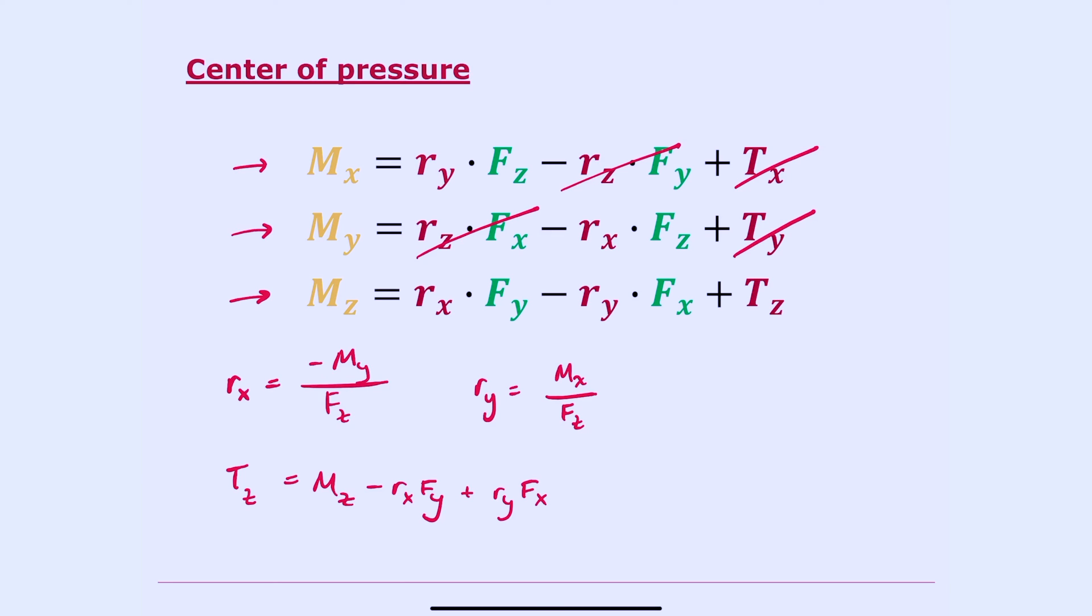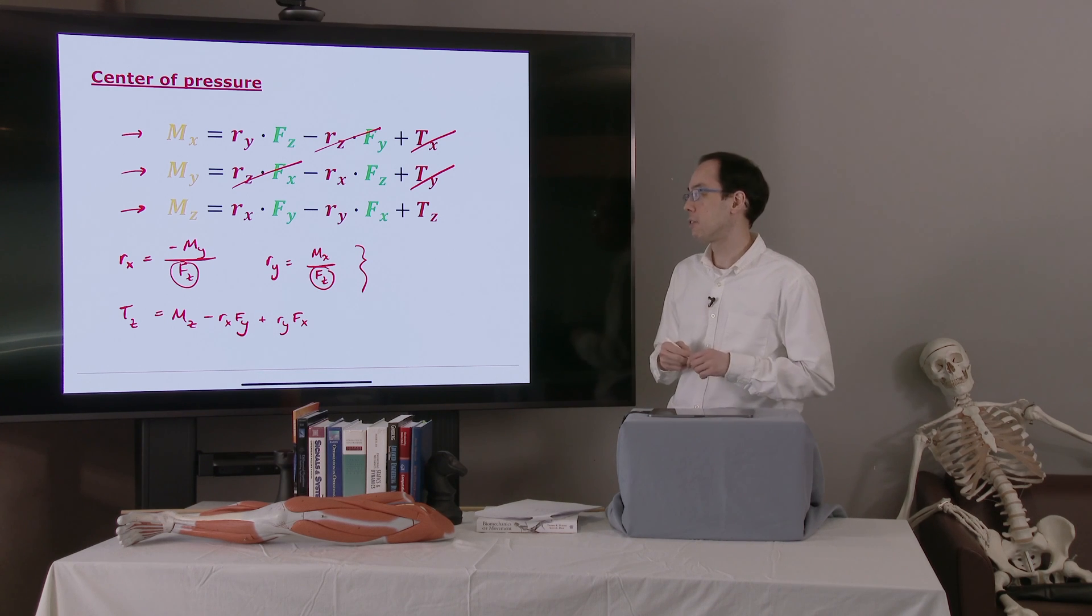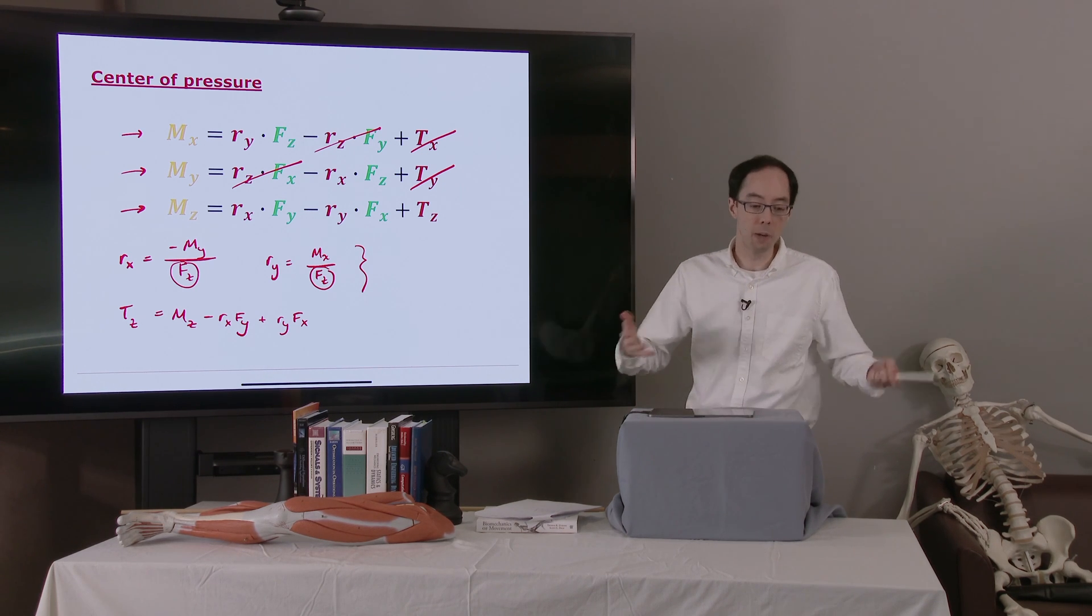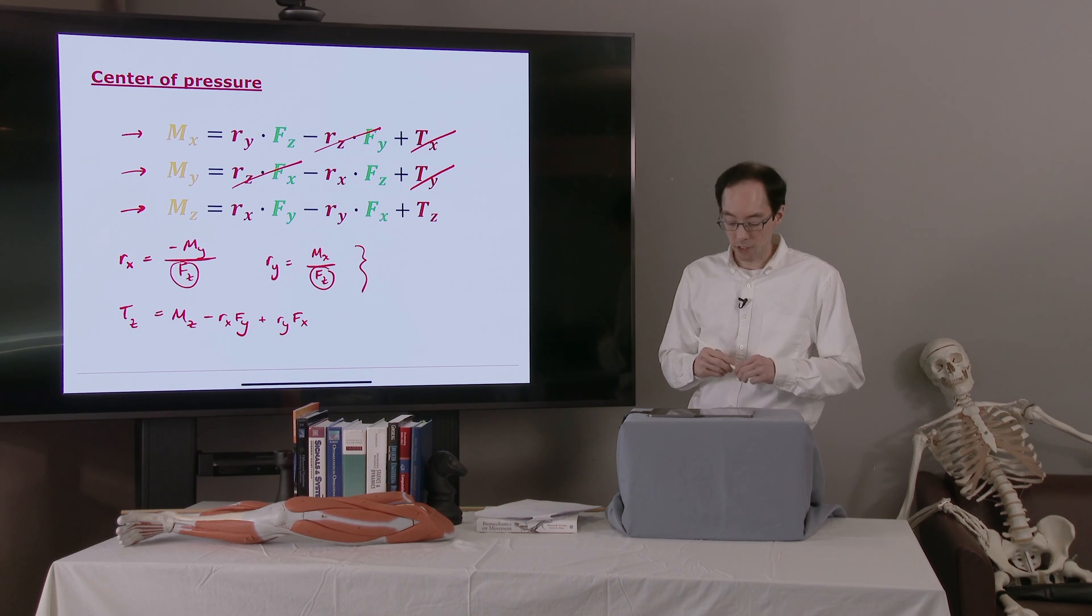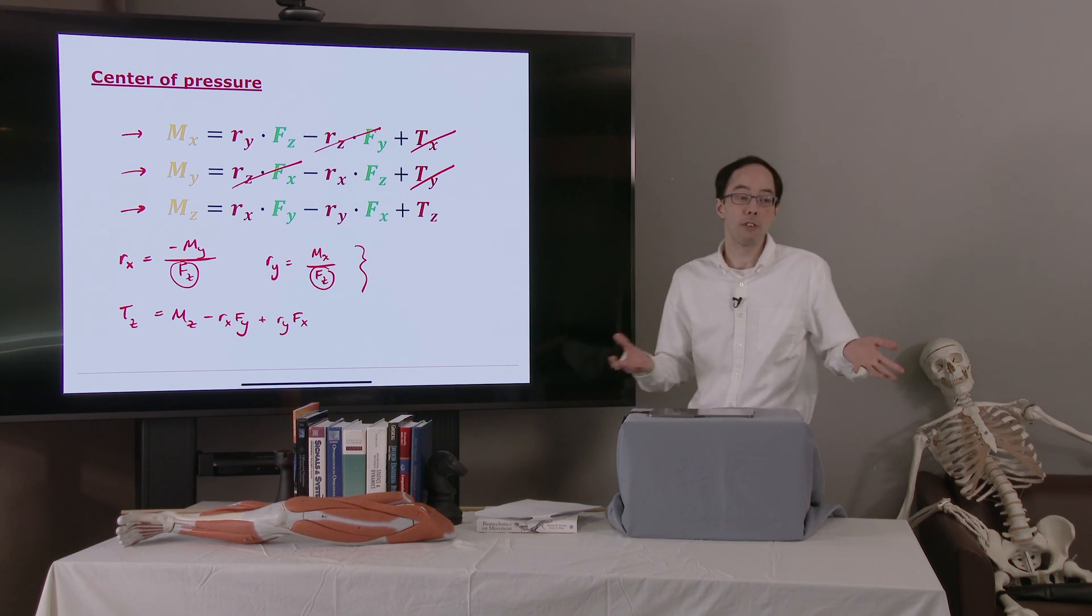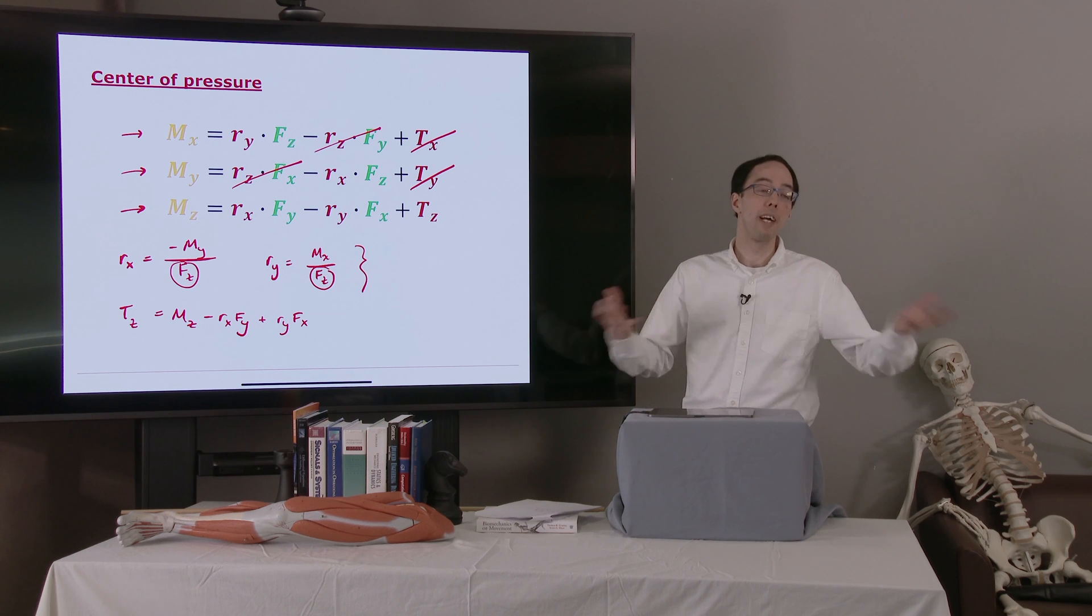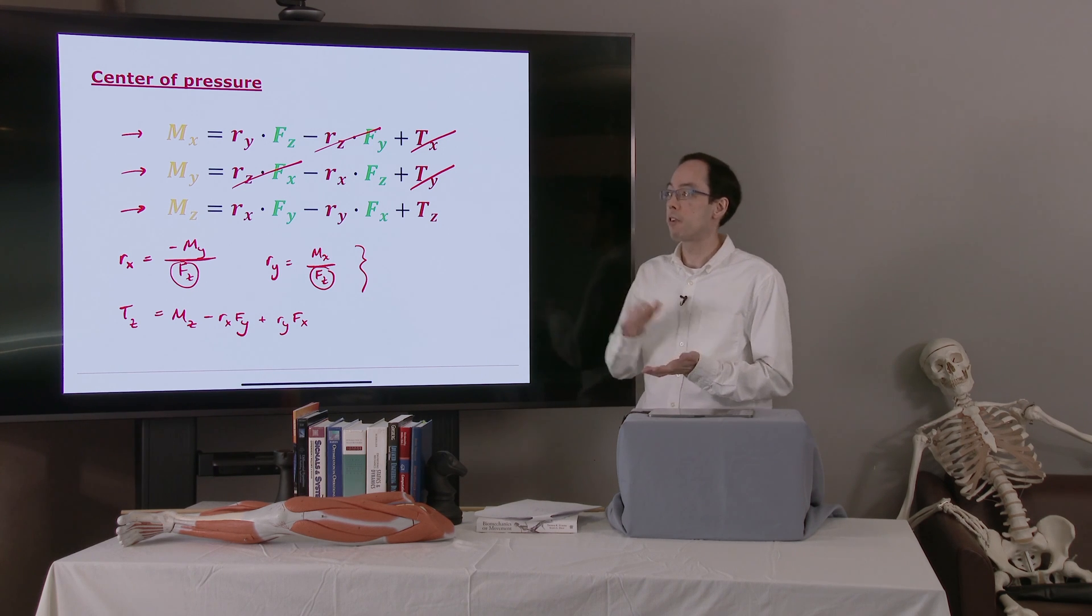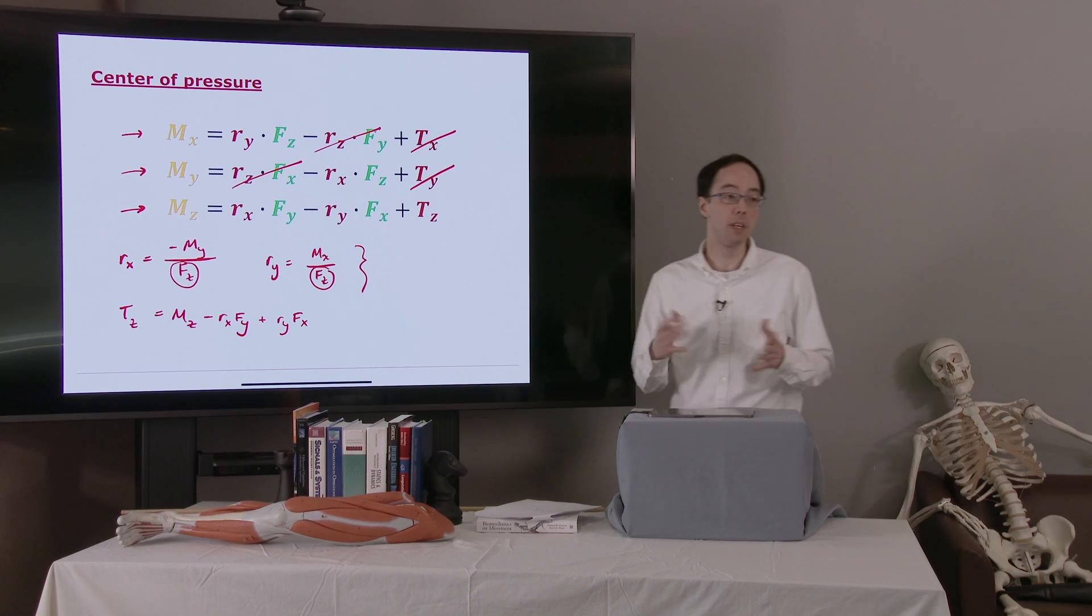Now what you'll notice about these equations for rx and ry, we have fz in the denominator. fz is the magnitude of the normal force. Now if the magnitude of the normal force is relatively large, then any noise in the signal is going to be relatively insignificant. But when fz gets very small, this noise will become more and more significant. And so as fz approaches zero, the signal will eventually go to zero and will end up with just noise. What this means is that our calculation of center of pressure during foot contact and toe-off is going to have a large amount of error, which is something we should be aware of.